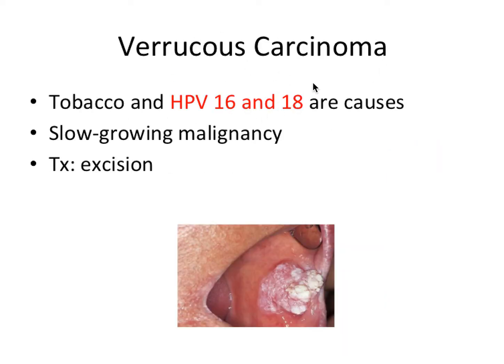Next we have verrucous carcinoma. If you remember, we talked about proliferative verrucous leukoplakia, which could be a starting point for this cancer, as it involves the same two HPV strains from the last video. Tobacco can also be a cause. It's a slow-growing malignancy and the treatment is surgical excision.